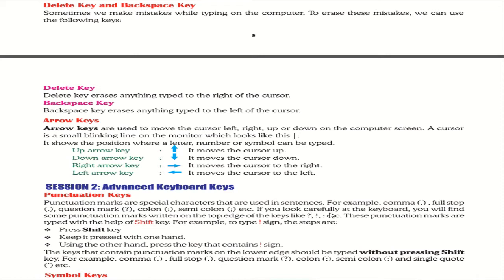Advanced keyboard keys: punctuation keys are special characters used in sentences, for example comma and full stop. Some keys have two characters on them — for instance, the number 1 key also has an exclamatory mark. The lower character can be typed directly, while the upper character such as the exclamatory mark requires pressing the Shift key.